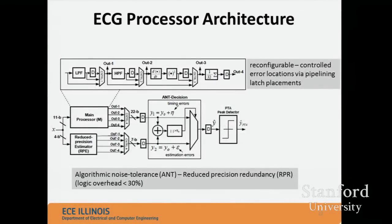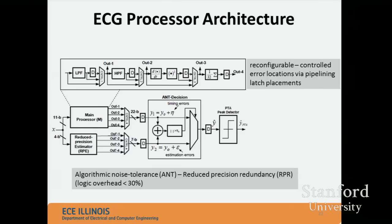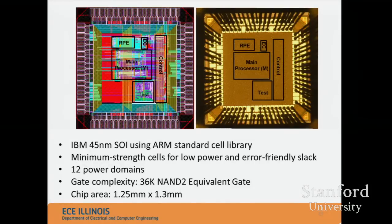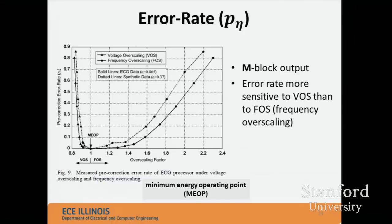Coming back to the ECG processor, the reduced precision estimator is used. It's a standard pipeline architecture with MUXes for bypass, controllability and observability. The overhead turned out to be 30% — all extra elements consumed about 30% of total complexity. This is a 45-nanometer purely synthesized design with measured results.